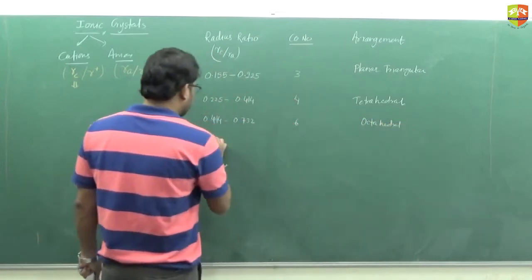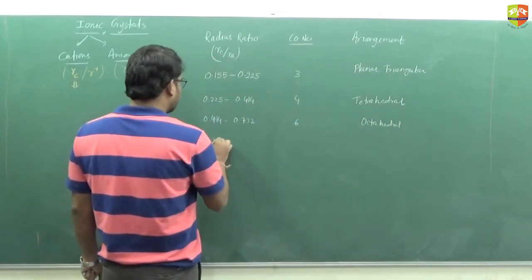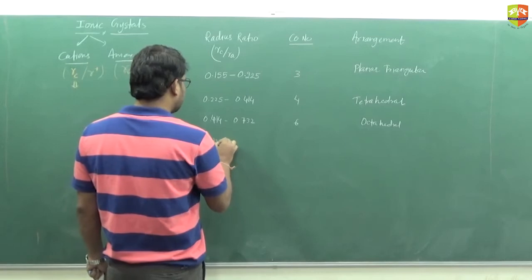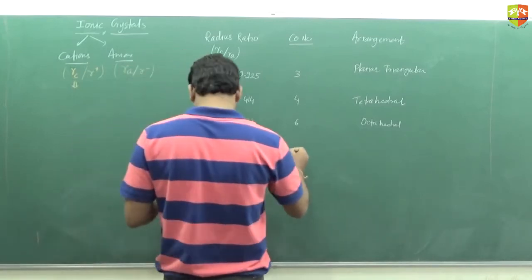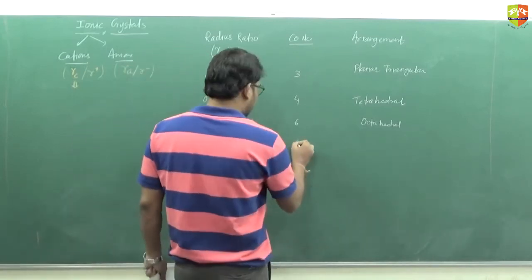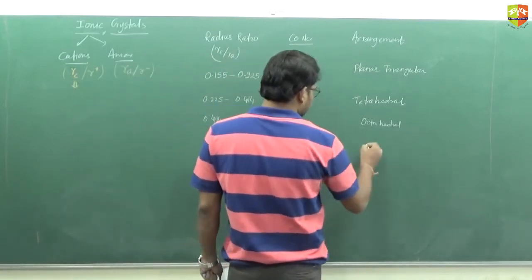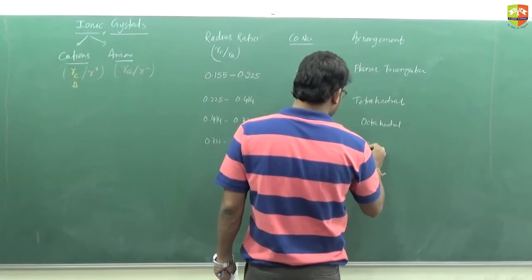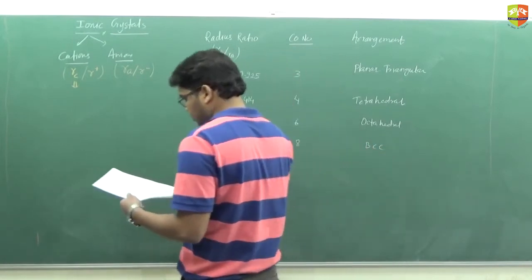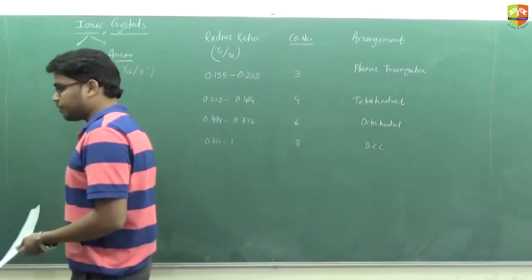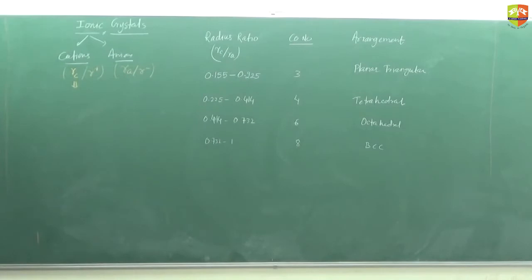For RC/RA of 0.414 to 0.732, the coordination number is 6 and the arrangement is octahedral void. For 0.732 to 1, the coordination number is 8 and the arrangement is BCC (body-centered cubic).